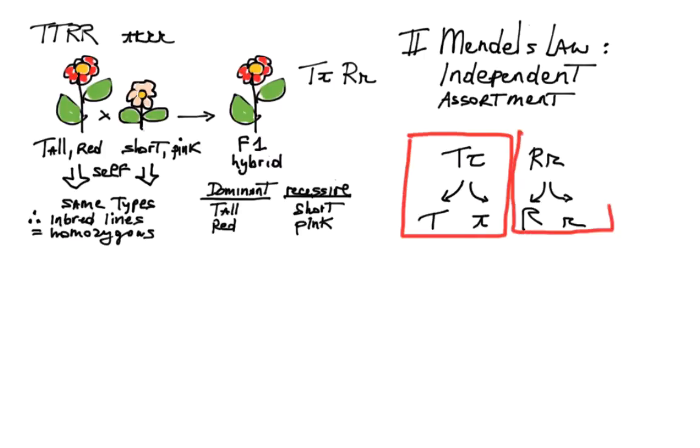One way to visualize this is to think of each gene as its own slot machine. The T machine can produce big T or little t independently of what the R machine does.